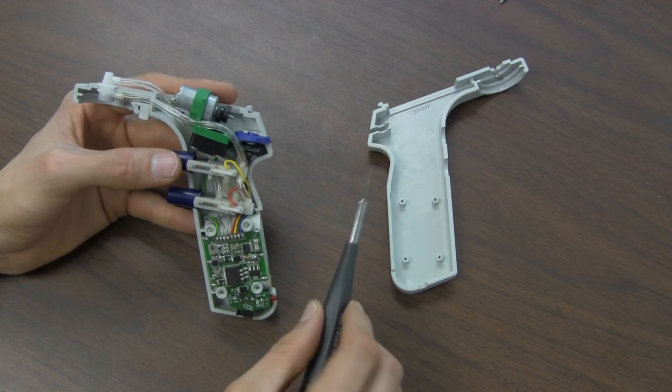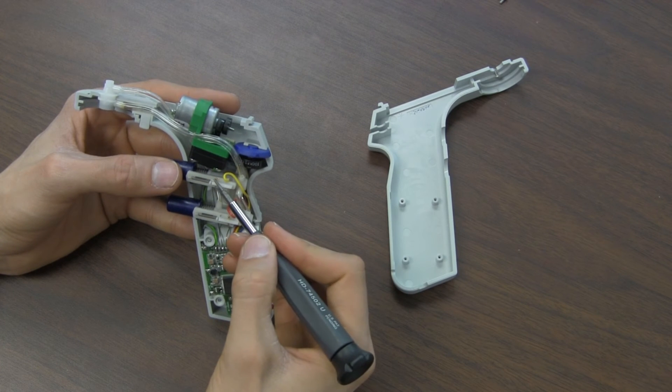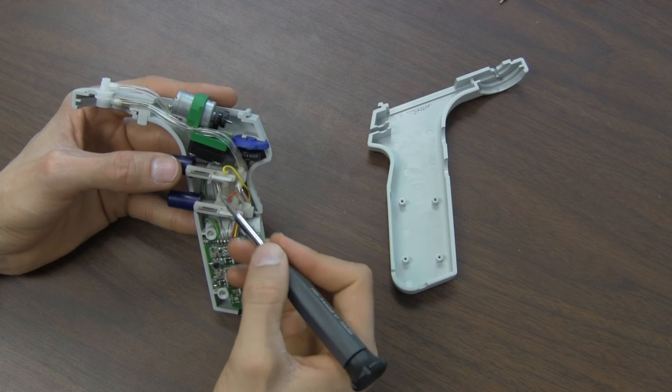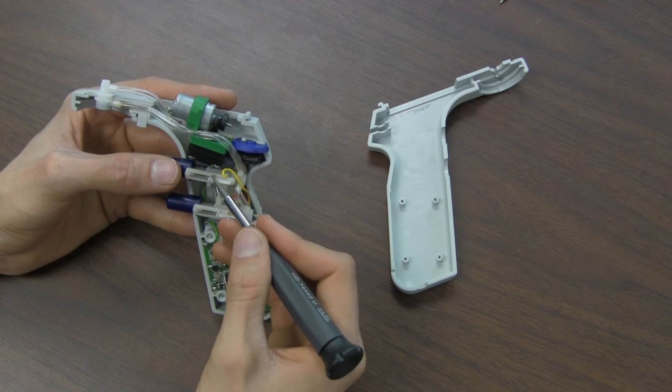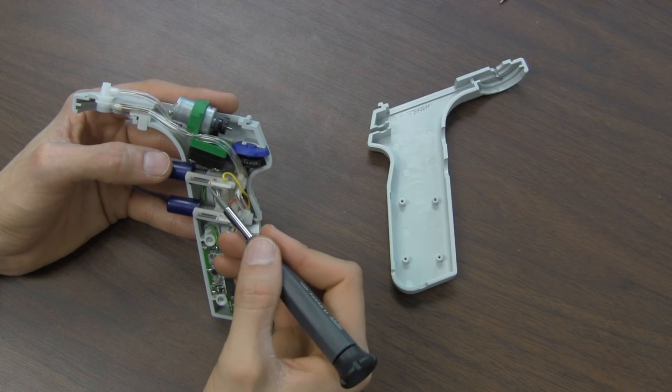And while it's open, it's a good thing to clean off these contacts here, right here and here, because it's a common point of corrosion and failure mode that the buttons don't work well anymore.